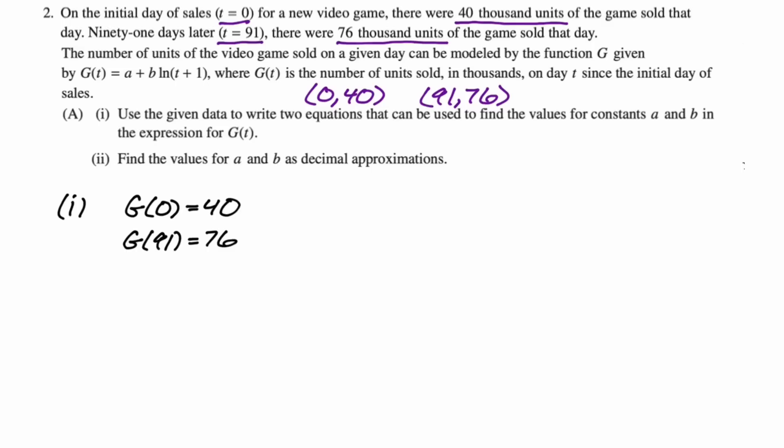I went ahead and I actually subbed in and said a plus b natural log of 0 plus 1 would equal 40. And then what's interesting is the natural log of 1 is 0, so that's basically just telling you a is 40. But I'm going to carry on anyway. a plus b natural log of 91 plus 1 is equal to 76. So that's it. That's two equations that can be used.